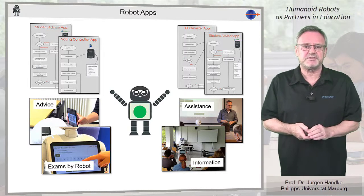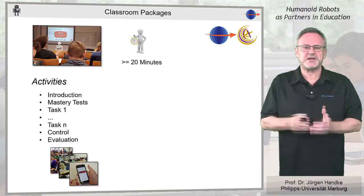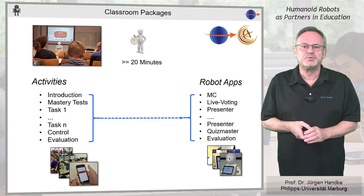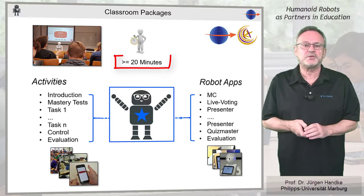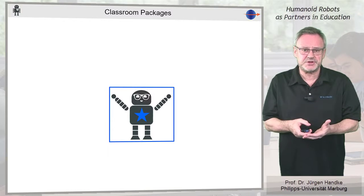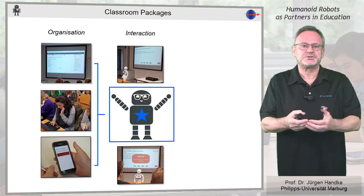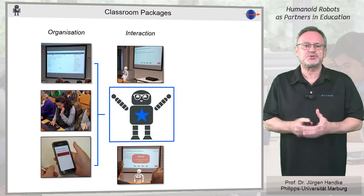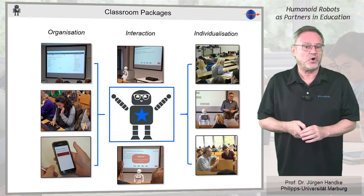Most promising, however, are our classroom packages. These bundle several in-class activities and thus several single apps into one complex package as a cumulative app, via which the robot controls all classroom activities for a longer period of time. The advantage of such a classroom package is the administration of all organizational activities by the robot, which, with its interaction options, controls the activities as emotionally as possible, and thus gives the human coach time for a more intensive and individualized supervision of the learners.